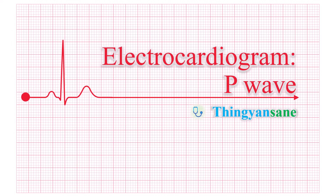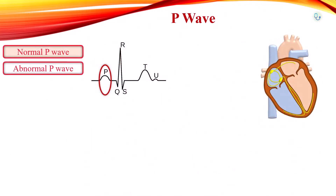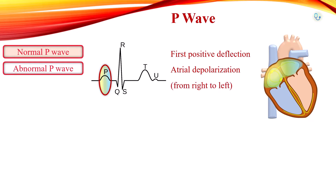In this video, I will present about the characteristics of normal P wave and common P wave abnormalities. P wave is the first positive deflection on the EKG. P wave represents atrial depolarization. Atrial depolarization proceeds sequentially from the right to the left. The right atrium depolarization is followed by the left atrium. P wave is the combination of both right and left atrial waveforms.